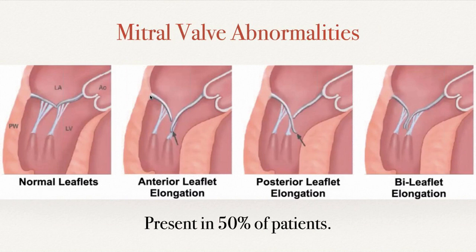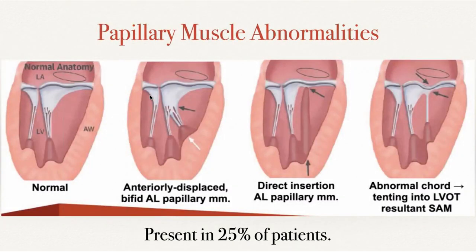Mitral valve abnormalities are quite common — the leaflets themselves are involved in about 50% of patients. The most common abnormality is anterior leaflet elongation, though posterior or bi-leaflet elongation can occur. The papillary muscles can also be involved in about 25% of patients, most commonly with anterior displacement and hypertrophy. You can have direct insertion of the papillary muscle to the ventricular side of the leaflets with no cords, or abnormal cords that lead to tenting, contributing to LVOT obstruction and systolic anterior motion.